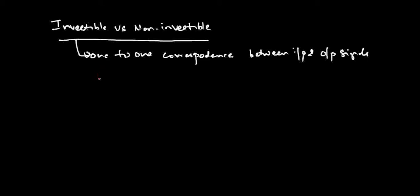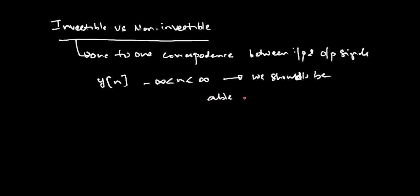If you know the output sequence y of n, where n can take values from minus infinity to plus infinity, and if you can find from that output the corresponding input x of n, then the system is invertible. This is only possible when there is a one-to-one correspondence between the two signals. If there is no such correspondence, it is hard to find x of n for any given y of n.